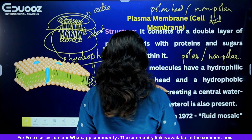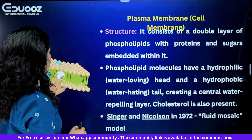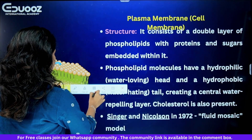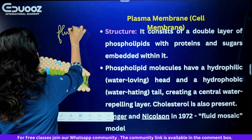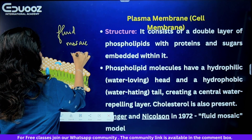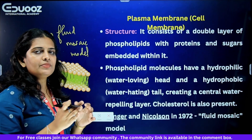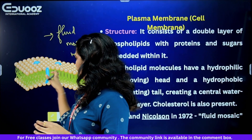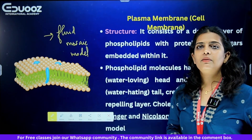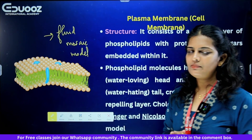The fluid mosaic model was proposed by Singer and Nicholson. This model describes the structure of the cell membrane, explaining its fluidity. This structure of the cell membrane is called the fluid mosaic model concept.